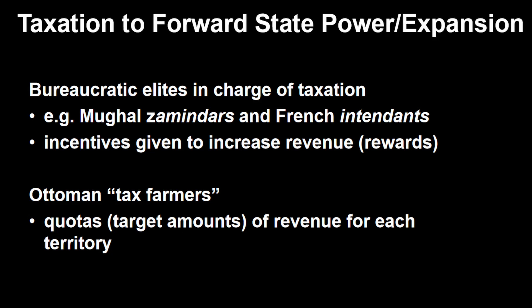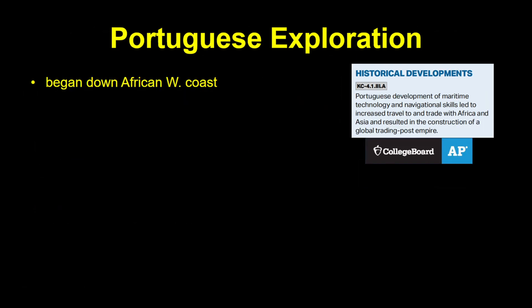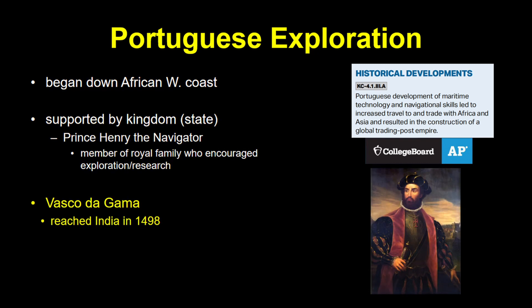We also saw in Unit 3 how large Asian states were becoming more effective at collecting taxes. So in order for a luxury good to get to Western Europe, it would have been taxed by multiple powerful governments, especially the Ottoman Empire. The Europeans were looking for other ways to access these Asian goods, and for the Portuguese that meant sailing around Africa. The Portuguese Kingdom sponsored this adventure, partially because of the influence of Prince Henry the Navigator. The goal of reaching India took generations, and Vasco da Gama finally arrived there in 1498.